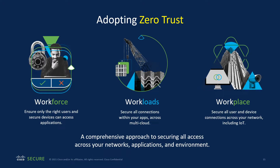Adopting zero trust is another value-add for mitigating overall ransomware risk. Zero trust is a framework, not a product, and Cisco has been a leader in it for a few years. We look at it through three W's: workforce, workload, and workplace. Workforce ensures the right users and devices are secure when accessing applications — multi-factor authentication and posture assessments. Workload covers traditional data centers, containers, virtualization, and cloud, ensuring we understand application communications and adding controls at the application and host level. Workplace involves software-defined access, controls on VPN, wired, and wireless, ensuring any asset is scrutinized before accessing the network, including IoT.